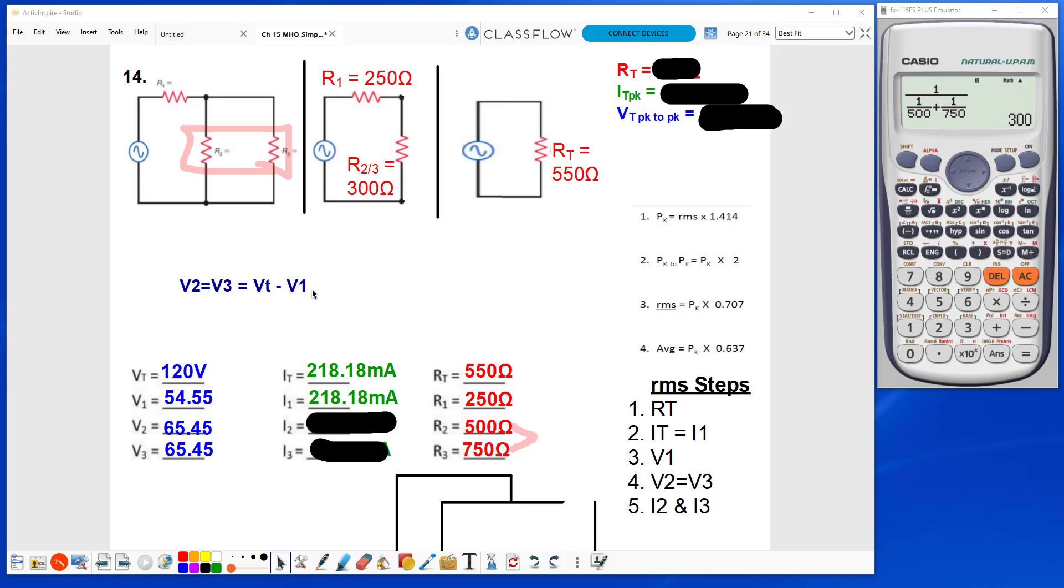Using this equation you see here. For I2, I take the V2 divided by the R2, that gives me my I2 value.